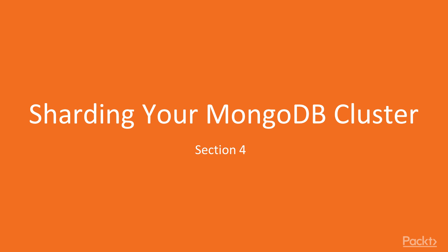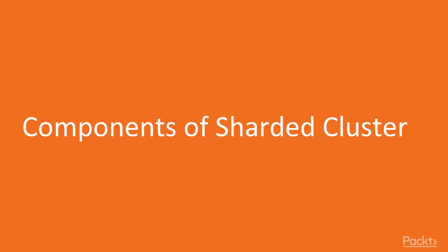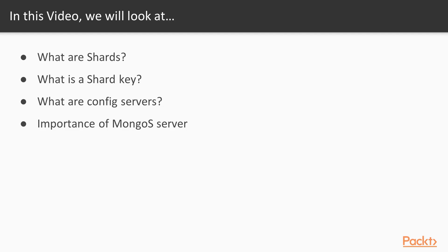We'll be seeing how to create sharded clusters in your MongoDB environment. In this particular section we'll have a look at the components of a sharded cluster. The agenda would be having a look at what exactly are shards, what is a shard key and its importance, what are config servers, and what is the importance of the mongos server. Let's first try to build a scenario around this to understand the mechanism properly.